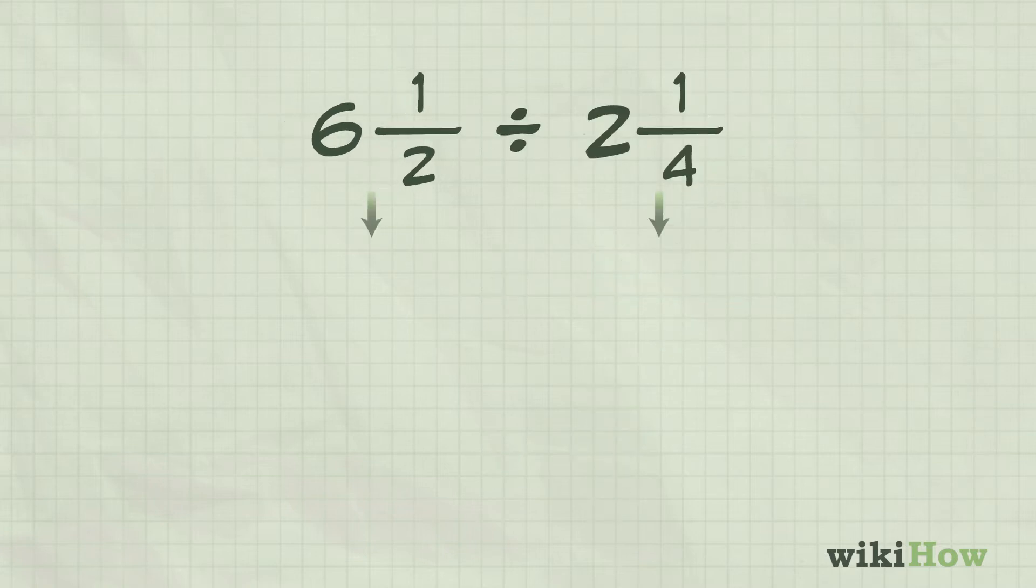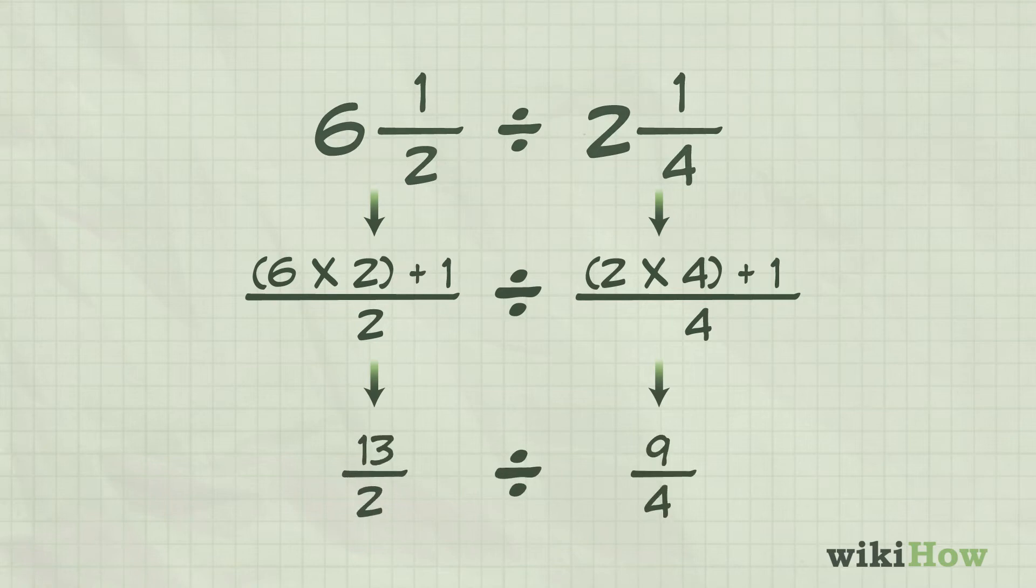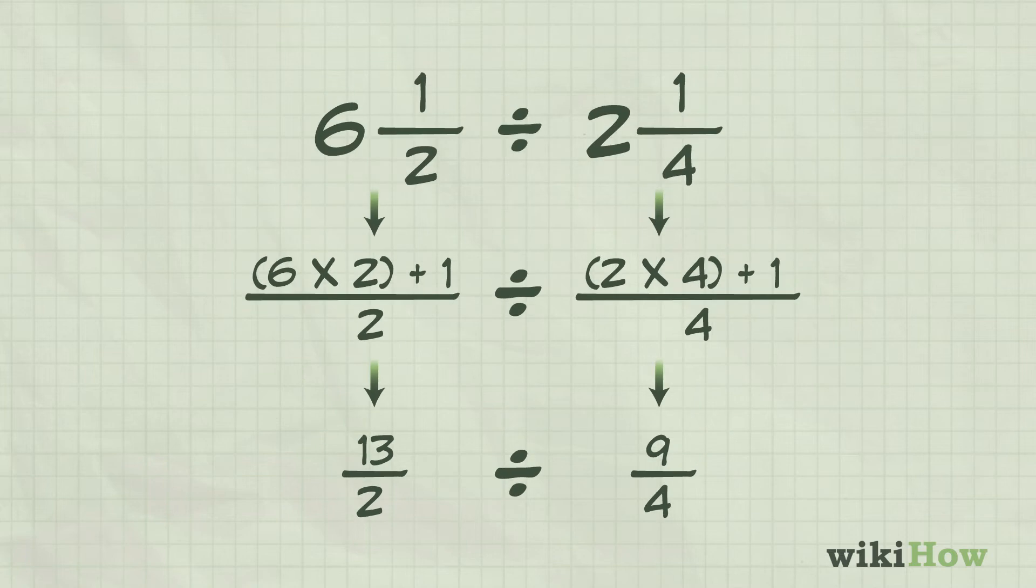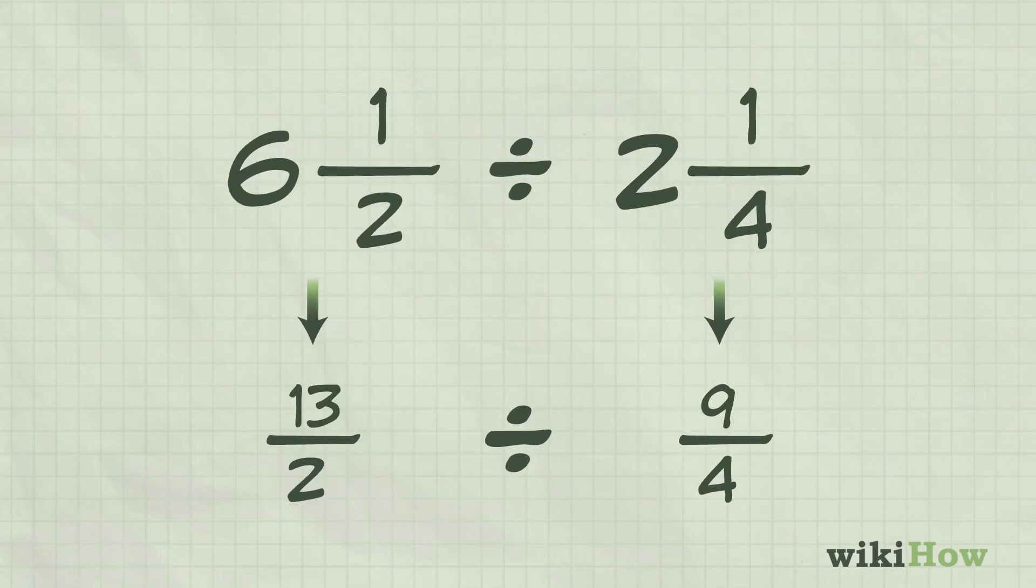Once you've converted all the mixed fractions into improper fractions, you can divide them. Let's say you have to solve the problem of 6 and a half divided by 2 and a quarter. Written as improper fractions, this would be 13 over 2 divided by 9 over 4.